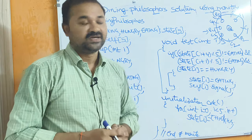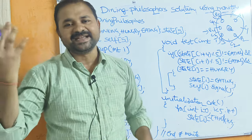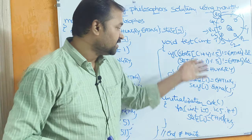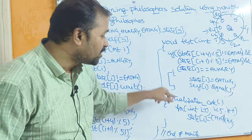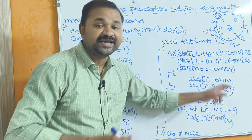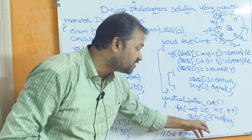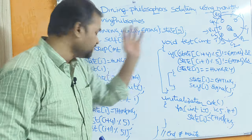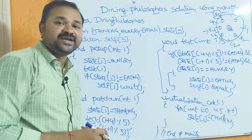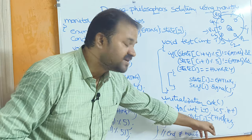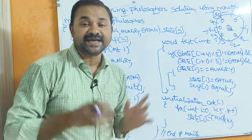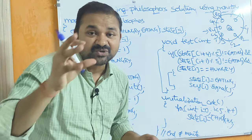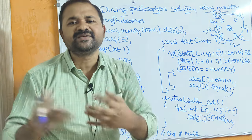If one of the conditions is false, the entire expression becomes false, so state[i] = eating won't execute. The previous state of philosopher 0 remains thinking. Once the test function is over and control returns, if state[i] != eating is true — thinking != eating is true — then self[i].wait() is called. That means P0 has to wait because its adjacent philosopher is busy eating.